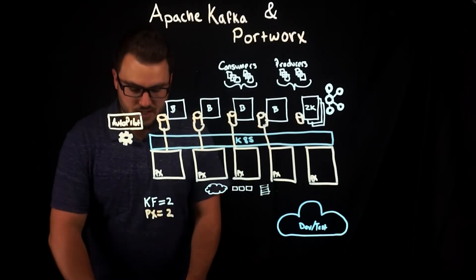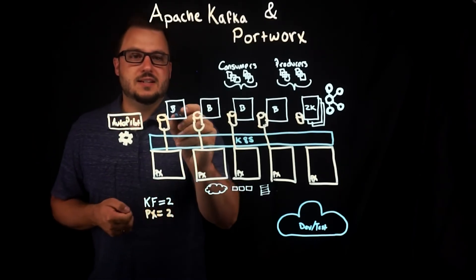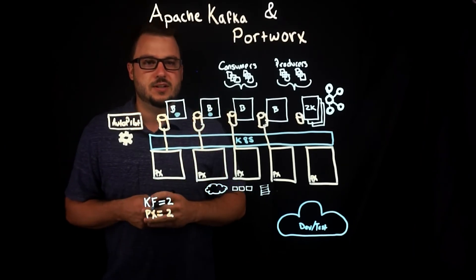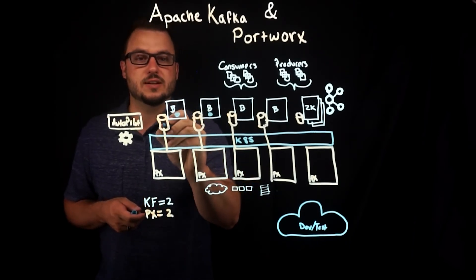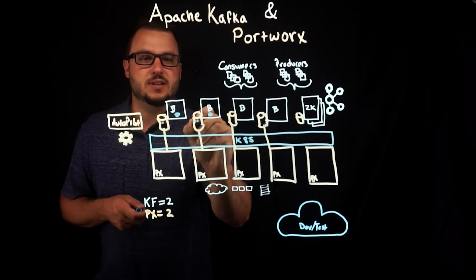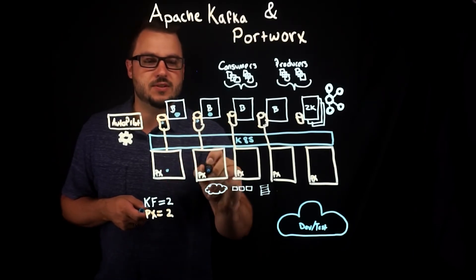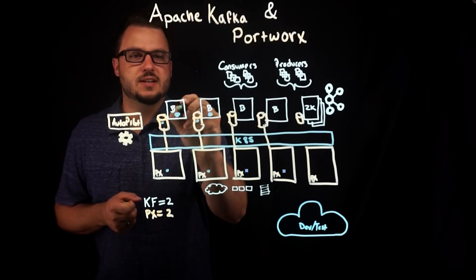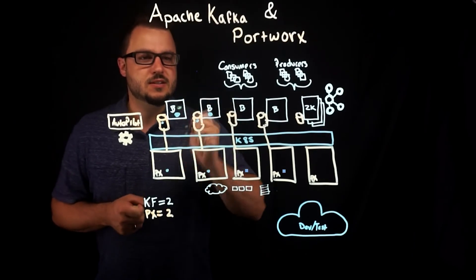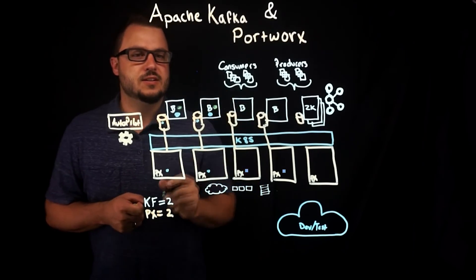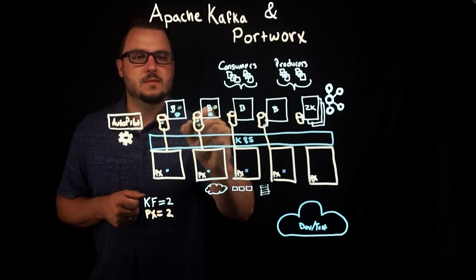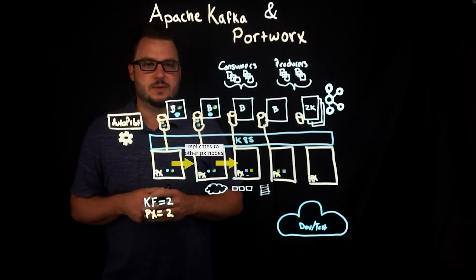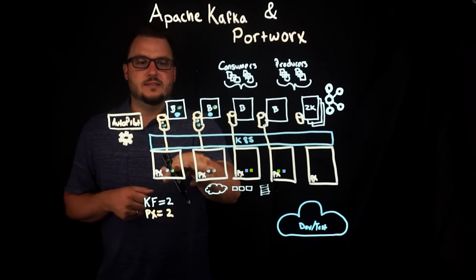So what does this actually look like? Let's say the blue color here is topic one, partition one. It's going to replicate that partition across brokers one and two. That then gets put on the Portworx volume and therefore on the Portworx node. You may have another partition — partition number two — and it also lives on those two nodes. So now we have both partitions with data replicated twice at the cluster level and twice at the Portworx level.